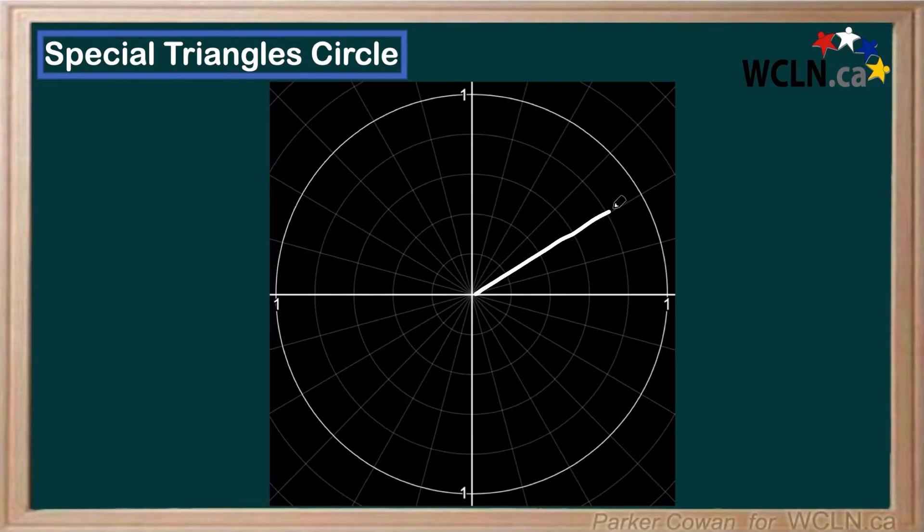So we've already seen that we can draw these out in radians. So we have our first 30 degree angle. We remember this is pi over 6. Then we have our second one, pi over 4, and our third one, pi over 3.